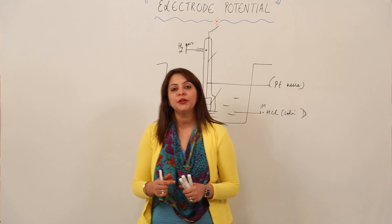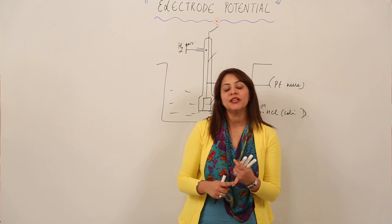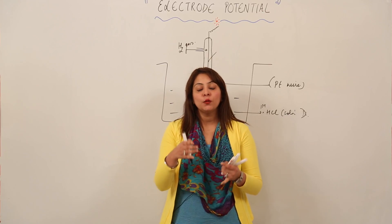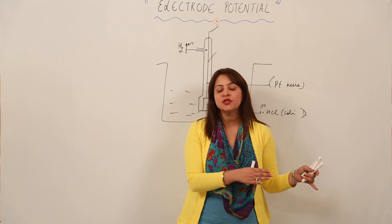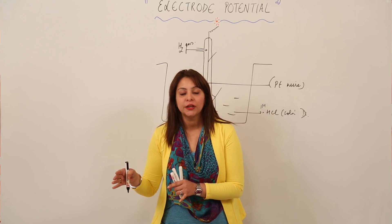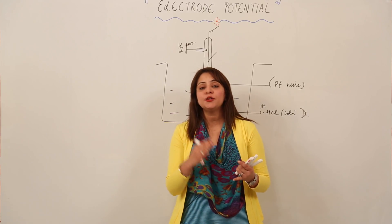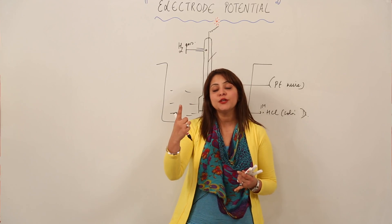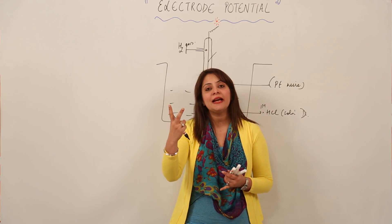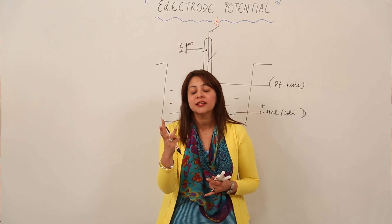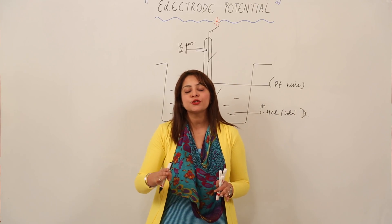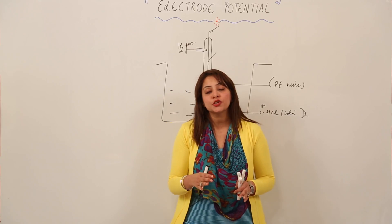As you are familiar with electrode potential, you know the tendency of an electrode to gain or lose electrons is its electrode potential. The one which has a tendency to lose electrons has an oxidation electrode potential, and the one which has a tendency to gain electrons has a reduction electrode potential. The electrode potential value depends on three factors: the nature of the metal and ions, the concentration of the metal and ions, and the temperature.